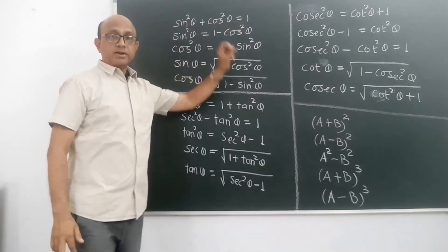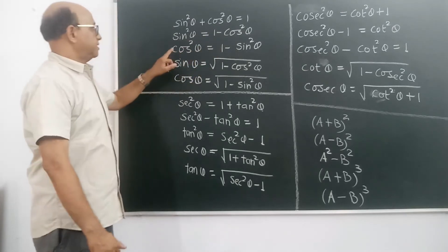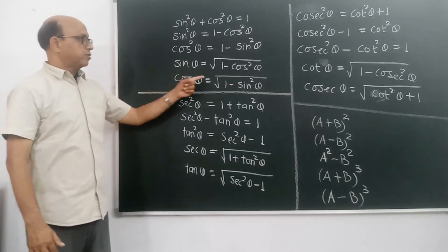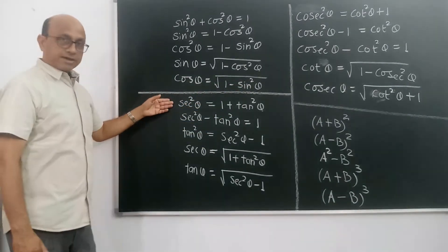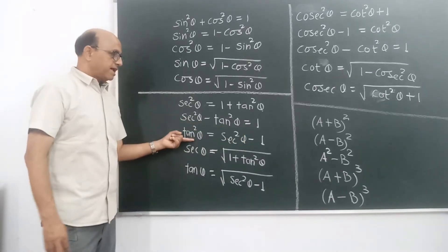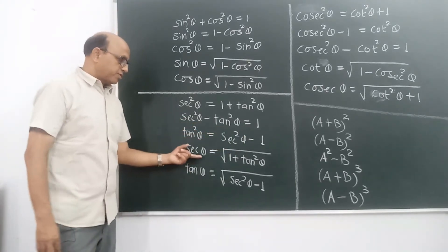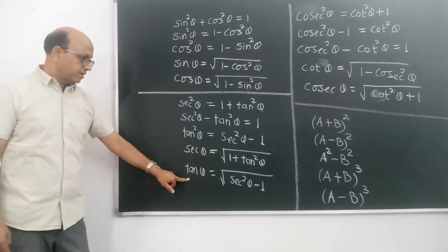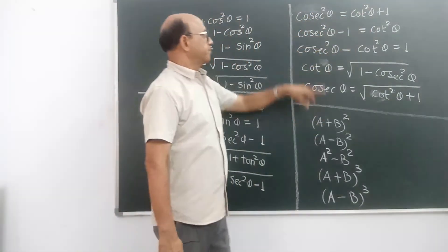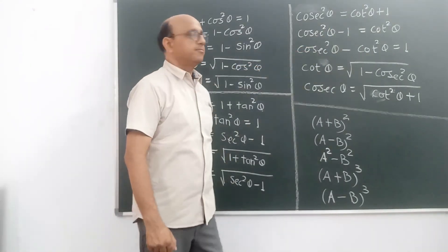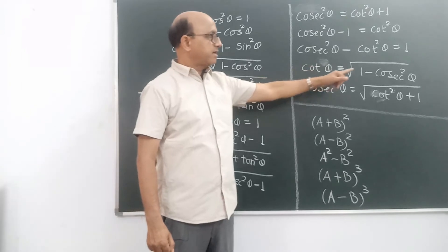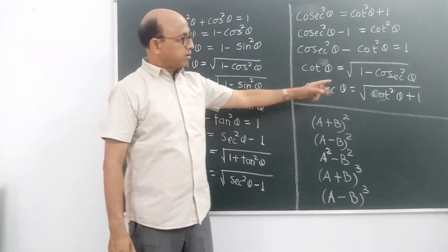Ab ek summary dekhte hain. Set 1 — sin aur cos: sin square theta plus cos square theta is equal to 1; sin square theta is equal to 1 minus cos square theta; cos square theta is equal to 1 minus sin square theta; sin theta is equal to square root of (1 minus cos square theta); cos theta is equal to square root of (1 minus sin square theta). Set 2 — sec aur tan: sec square theta is equal to 1 plus tan square theta; sec square theta minus tan square theta is equal to 1; tan square theta is equal to sec square theta minus 1; sec theta is equal to square root of (1 plus tan square theta); tan theta is equal to square root of (sec square theta minus 1). Set 3 — cosec aur cot: cosec square theta is equal to cot square theta plus 1; cosec square theta minus 1 is equal to cot square theta; cosec square theta minus cot square theta is equal to 1; cot theta is equal to square root of (cosec square theta minus 1); cosec theta is equal to square root of (cot square theta plus 1).